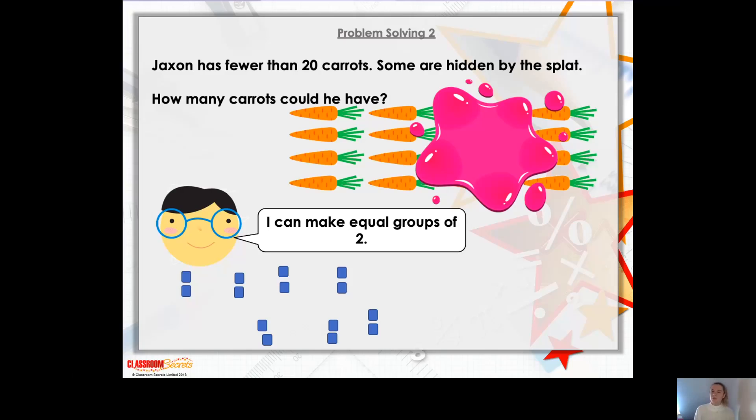So what I'd like you to do is pause the video and have a go with 15, 16, 17, 18 and 19. But remember what I said about even numbers, because we've been able to make equal groups of two with our even number 14. Pause the video now and have a think.